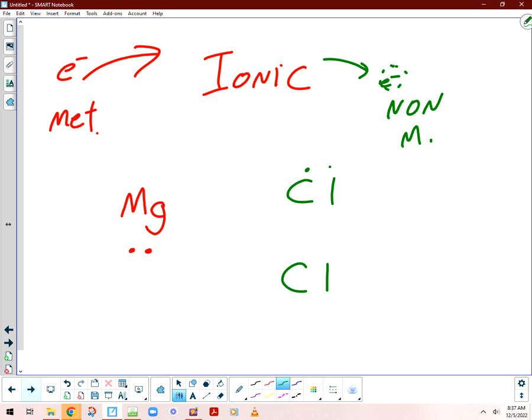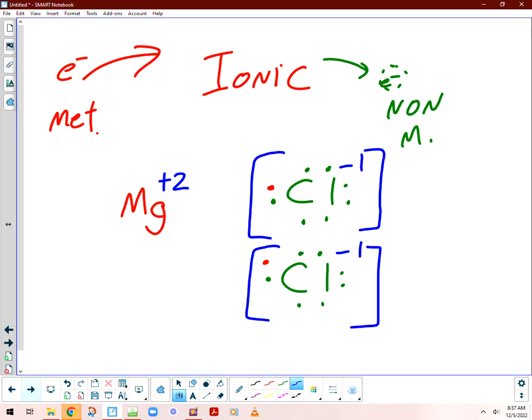Chlorines are going to have seven electrons each. And so each one is going to end up stealing an electron from my magnesium. And magnesium loses two charges, so it's going to end up, the charge is positive two. Each chlorine ends up with a charge of negative one. And we draw that by putting those electrons around the chlorines.